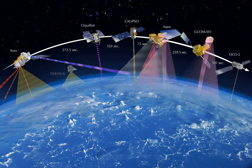An Earth observation satellite, or Earth remote sensing satellite, is a satellite specifically designed for Earth observation from orbit, similar to spy satellites but intended for non-military uses such as environmental monitoring, meteorology, map-making, etc.